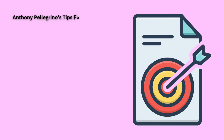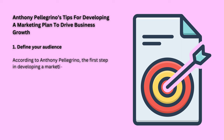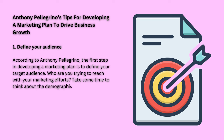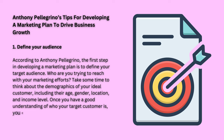Anthony Pellegrino's Tips for Developing a Marketing Plan to Drive Business Growth. Tip 1: Define Your Audience. According to Anthony Pellegrino, the first step in developing a marketing plan is to define your target audience. Who are you trying to reach with your marketing efforts? Take some time to think about the demographics of your ideal customer, including their age, gender, location, and income level. Once you have a good understanding of who your target customer is, you can begin to develop a marketing plan that will resonate with them.